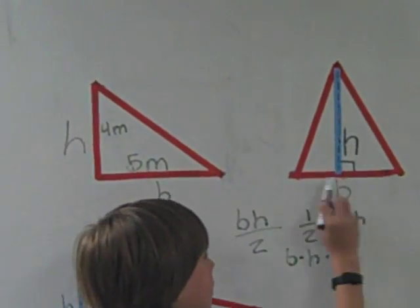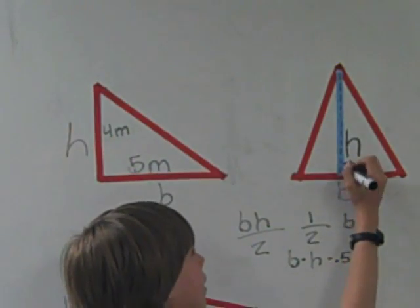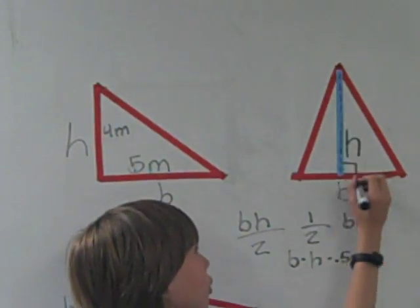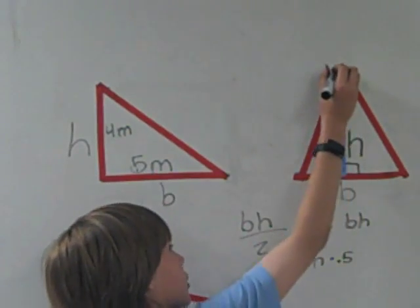On this one, the base is the bottom, and the height splits the triangle. It's still perpendicular and reaches the highest point.